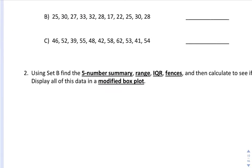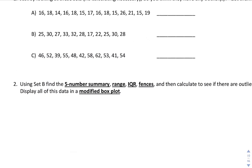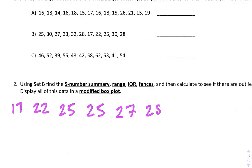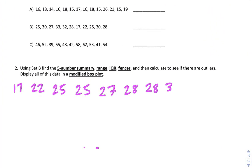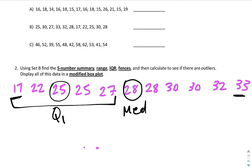Let's do a modified box plot one more time using set B. First, I need to put it in order: 17, 22, 25, 25, 27, 28, 28, 30, 30, 32, 33. Now let's find the five-number summary. The minimum is 17, the maximum is 33. Crossing off to the middle gives us a median of 28, which is actually in our data set. Q1 is 25, looking at everything below the median. Q3 is 30, looking at everything above.